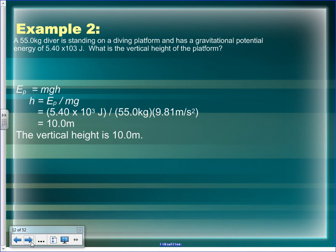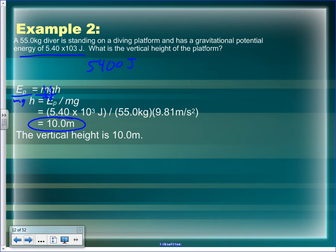Second example: a 55 kg diver on a diving platform has 5,400 joules of energy. What's the height of the platform? Rearrange EP = mgh to get H = EP ÷ (m × g) = 5400 ÷ (55 × 9.81). That gives us the 10-meter diving platform.